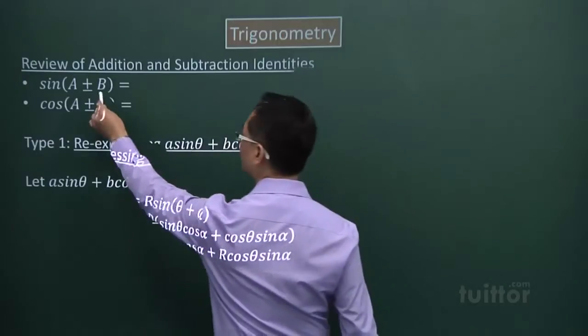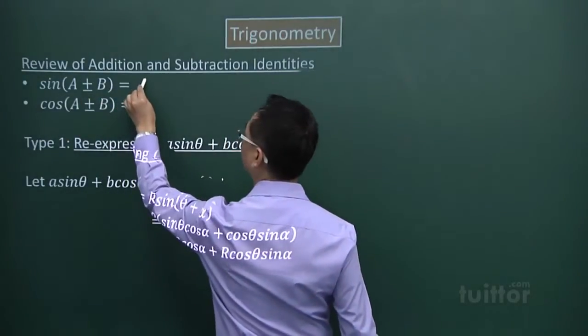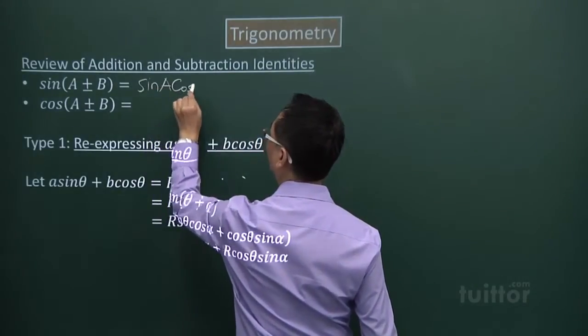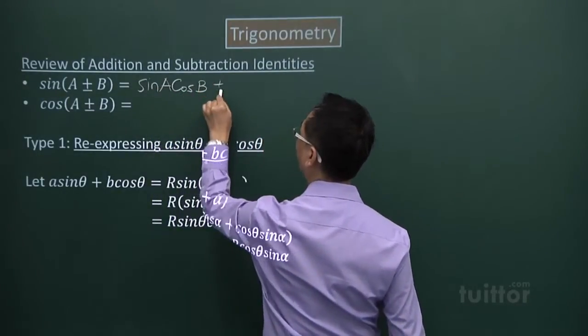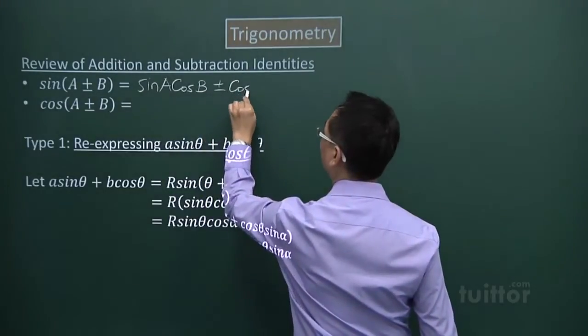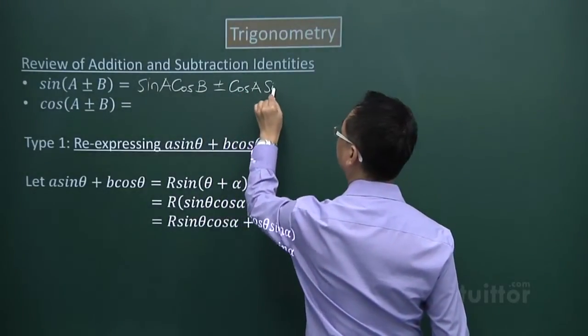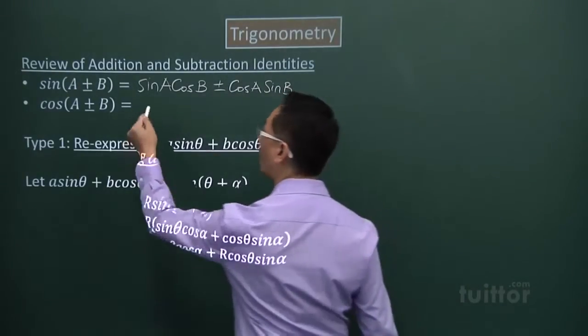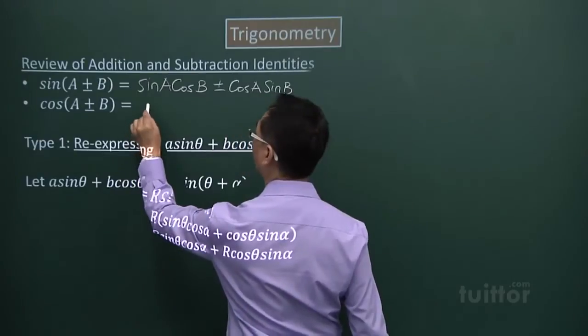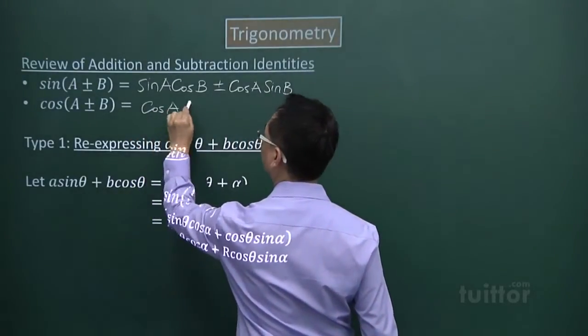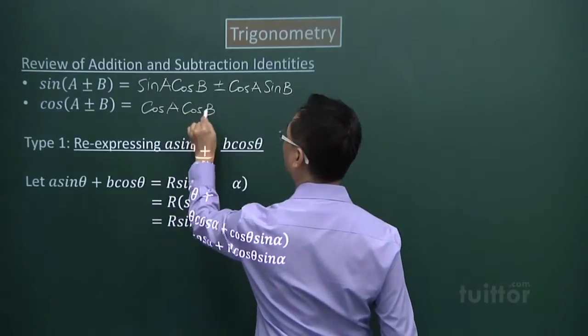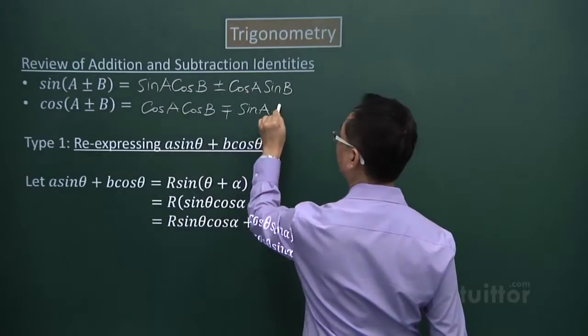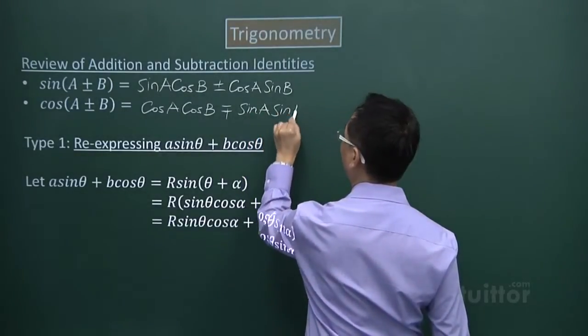So here, when expanded, I would have sin(A ± B) = sinA cosB ± cosA sinB. As for the second one, I would have cos(A ± B) = cosA cosB ∓ sinA sinB.